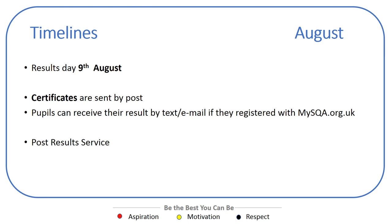Before we know it, it will be August. Results day is Tuesday the 9th of August. Everyone receives their certificate by post, and if pupils have registered with MySQA they will also receive their results by text or email. Current SQA publications indicate that for session 21-22 there will be a return to the previous system for the post-results service. This is an SQA procedure used by schools if they believe there could have been an error during marking — it is not an appeal system and is not reviewing the performance, effort, or borderline mark of a pupil. The system purely reviews the performance of the marker, not the pupil. More information about the post-results service will be available nearer the time.